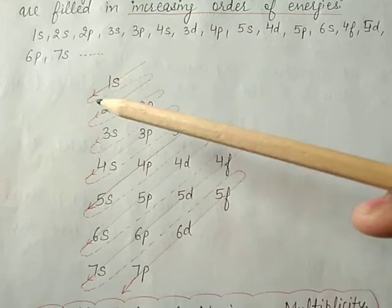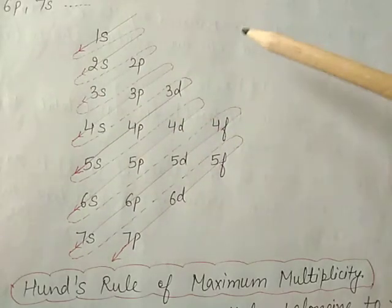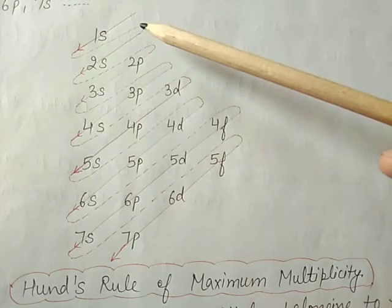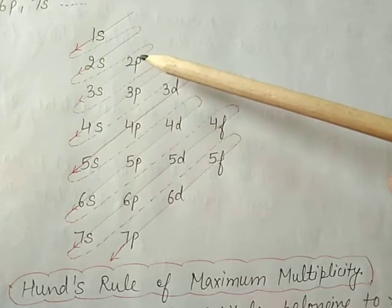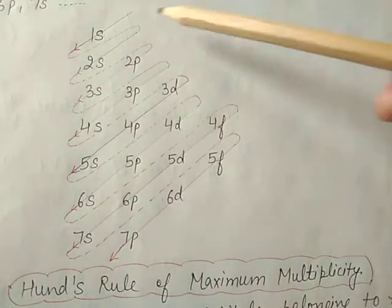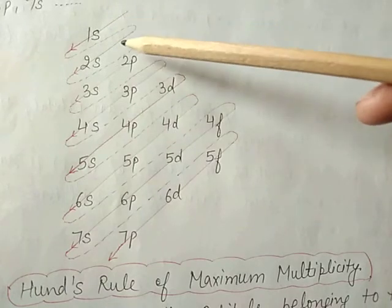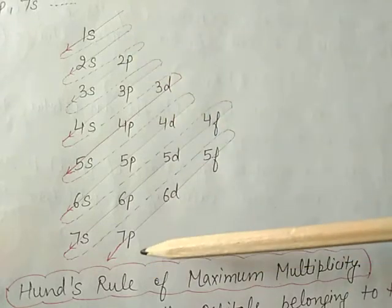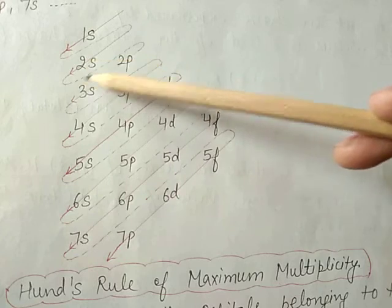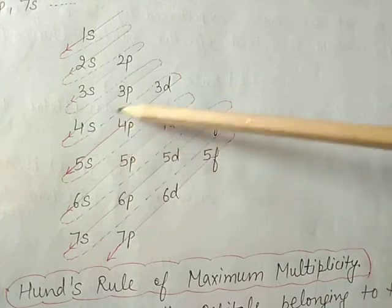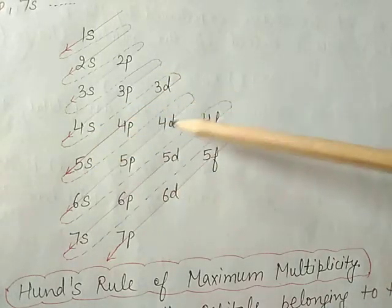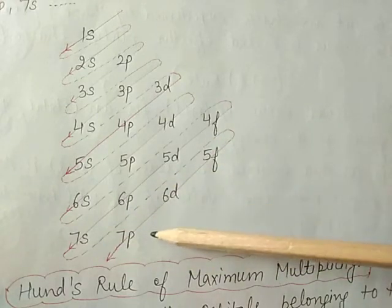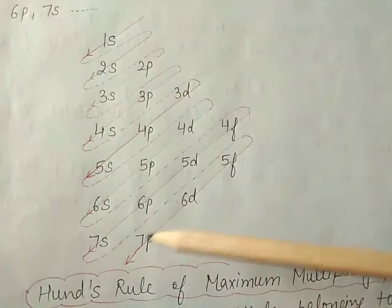This table shows that orbitals are filled in the increasing order of energy. Electrons first occupy the lowest energy orbital available and enter higher energy orbitals only after lower ones are completely filled. Starting from the top, the direction of the arrow shows the order of filling: 1s, 2s, 2p, 3s, 3p, 4s, 3d, 4p, 5s, 4d, 5p, 6s, 4f, 5d, 6p, 7s, 5f, 6d, 7p. So 7p has the highest energy.